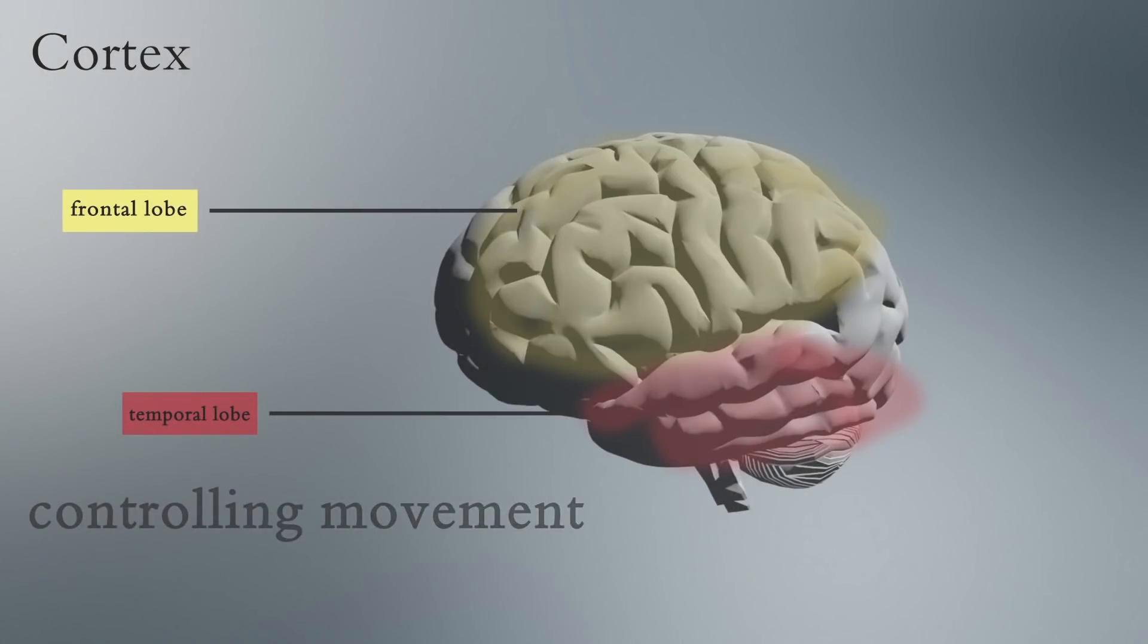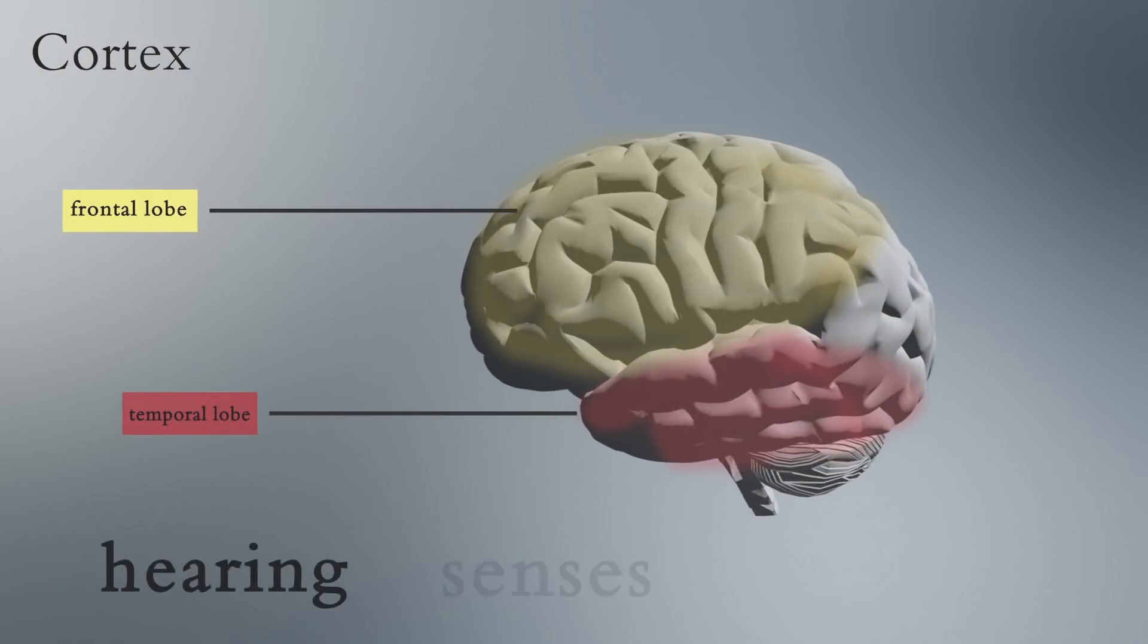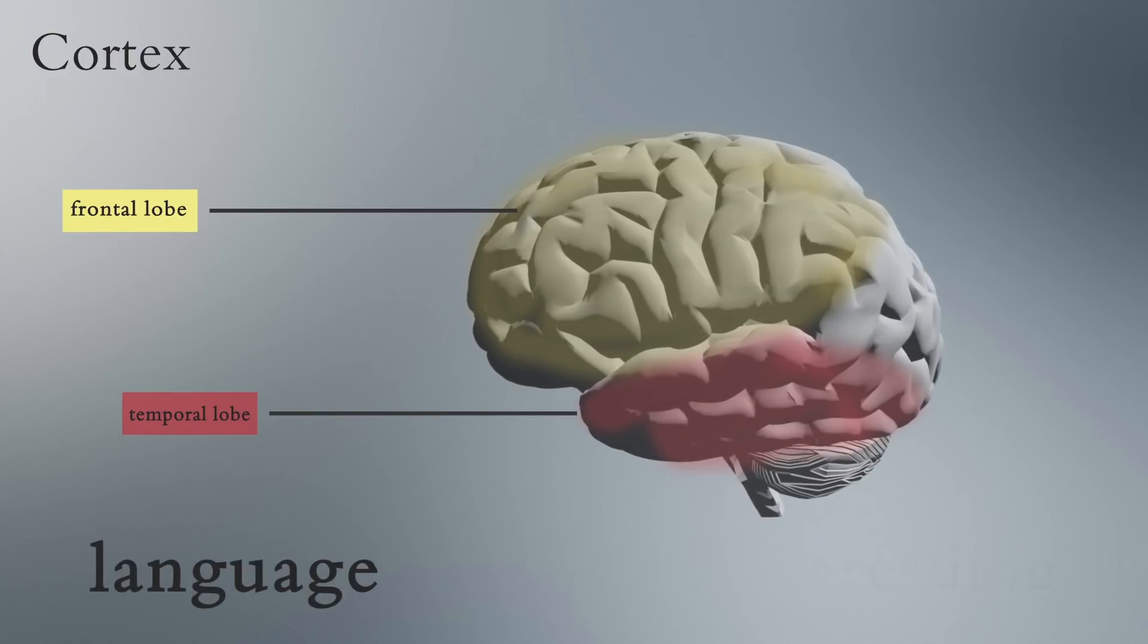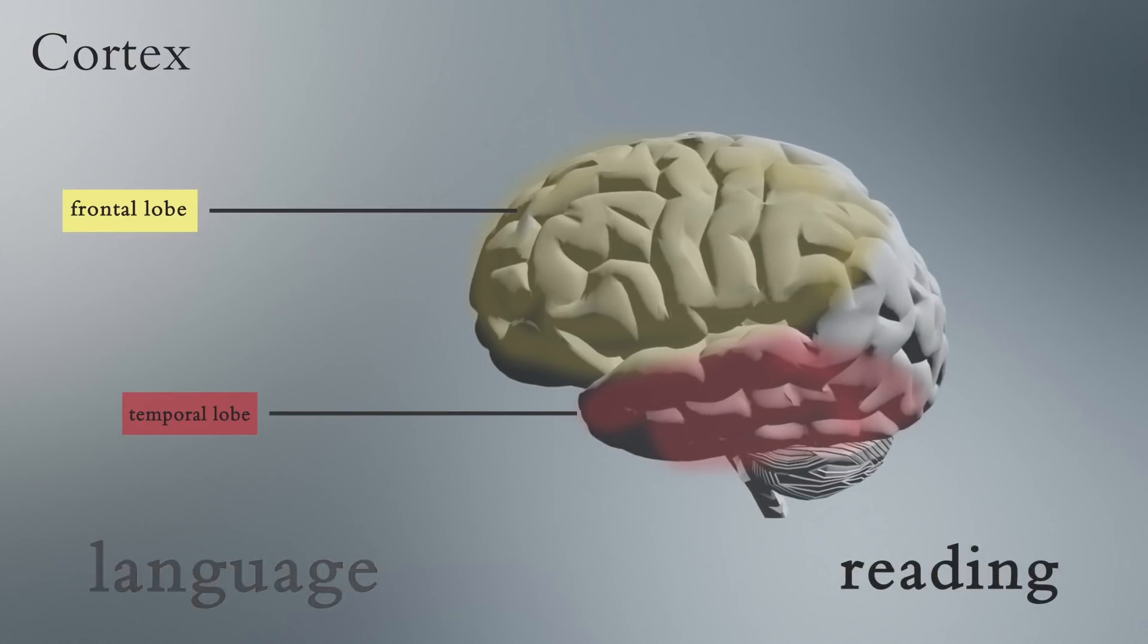It continues to develop until you're in your mid-twenties. The temporal lobe helps process your hearing and other senses, and helps with language and reading.